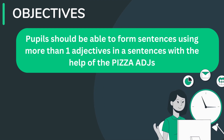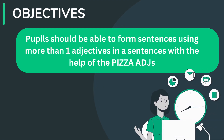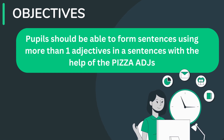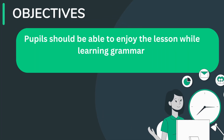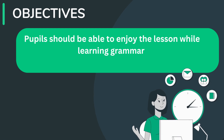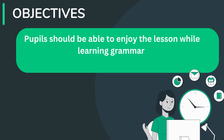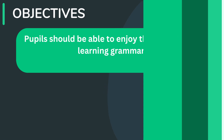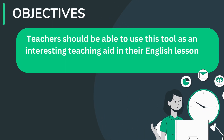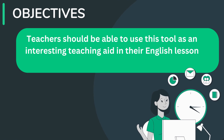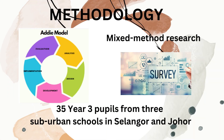Let's look at the objectives. Pupils should be able to form sentences using more than one adjective in a sentence with the help of the Edge Pizza. Pupils should be able to enjoy the lesson while learning grammar. Pupils should also be able to use these tools as an interesting teaching aid in their English lessons.